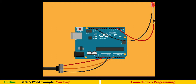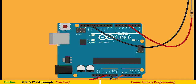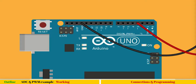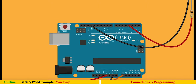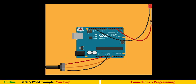We have a potentiometer connected to A0 and an LED connected to pin number 3. Pin number 3 is a PWM output — you can see there is a tilde marked there. All pins with the tilde are PWM outputs. Pin number 3 is a PWM output and the other probe of the LED is connected to ground. We also have a 100 ohm resistor to protect the LED.